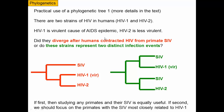A question we might want to ask is: did HIV-1 and HIV-2 diverge after humans contracted HIV from simians — from primate SIV, simian immunodeficiency virus — meaning there's a common ancestor and then HIV-1 and HIV-2 split from it? Or do these strains represent two distinct infection events that were separate, where we picked up HIV-1 from one type of SIV and HIV-2 from a different SIV?